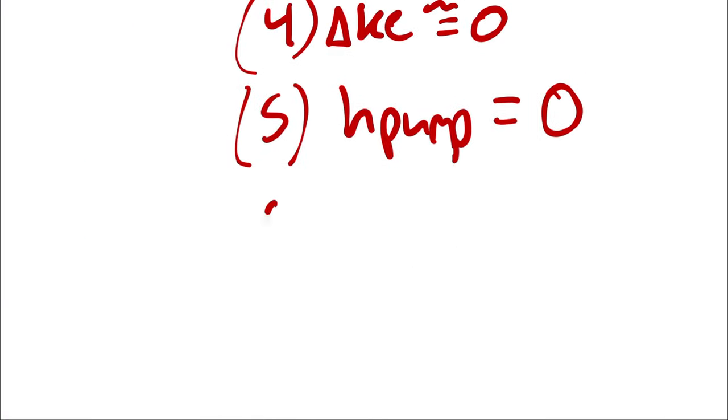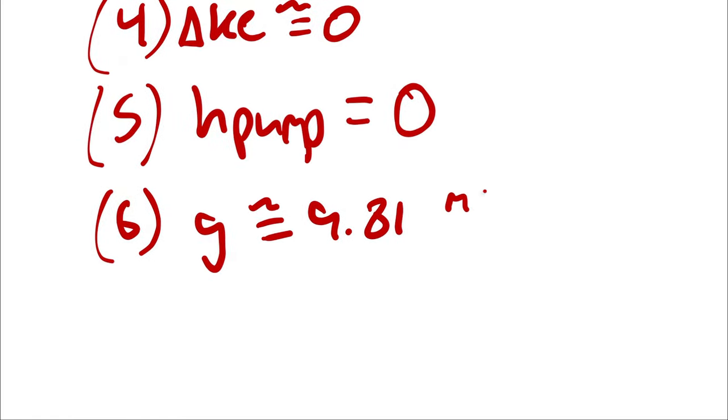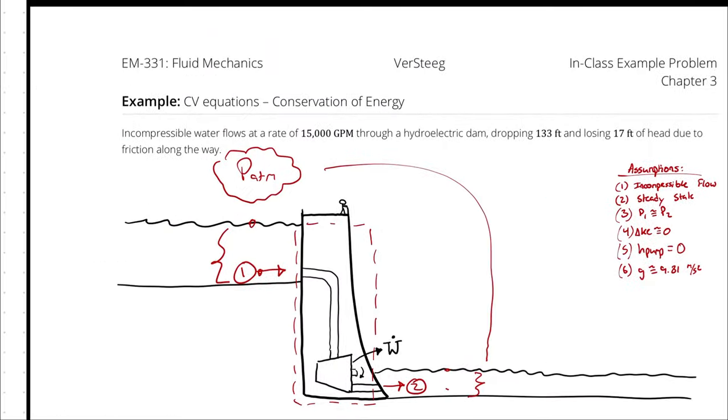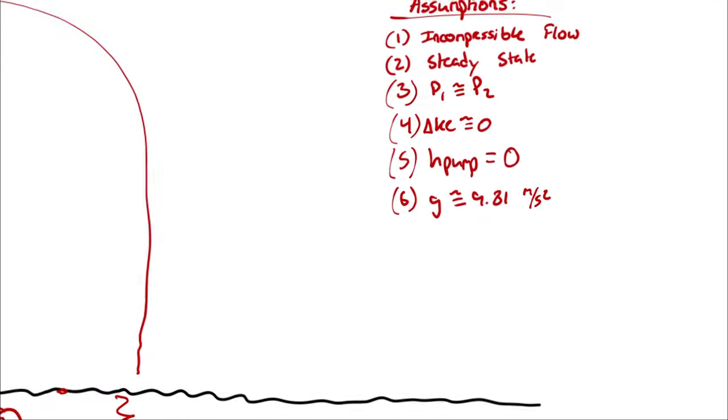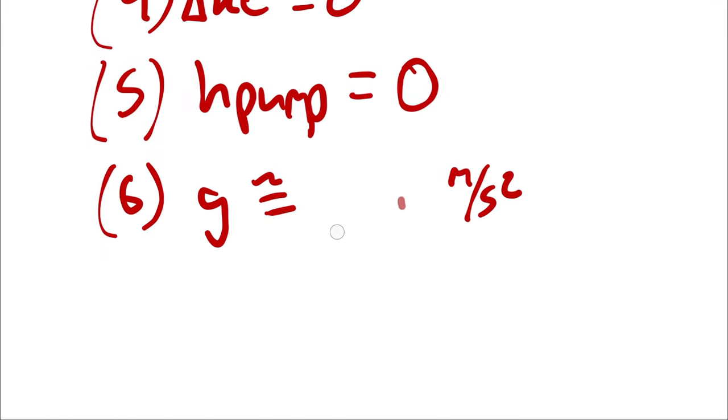So I will add to our assumptions gravity is about 9.81 meters per second squared, which, because we have imperial units, is probably more convenient to write in terms of feet per second squared. So I will write 32.2 feet per second squared.